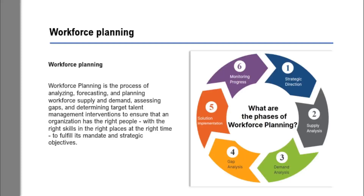The first one is the strategic direction. This step involves linking the workforce planning process with the strategic plan, annual performance, business plan, and work activities required to carry out the goals and objectives of the organization, and also for the performance plan.